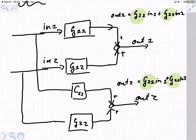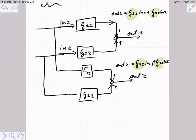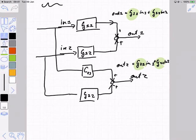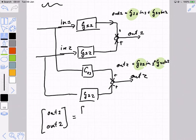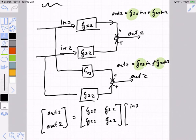And most of you should be able to easily understand that I can write this in matrix form as out1, out2 as a vector here, is equal to g11, g12, g21, g22, times their respective inputs.